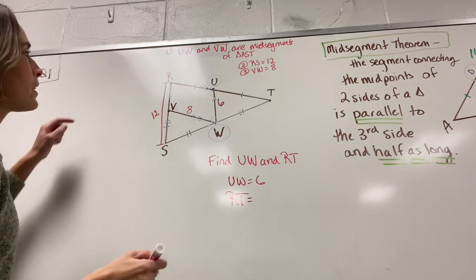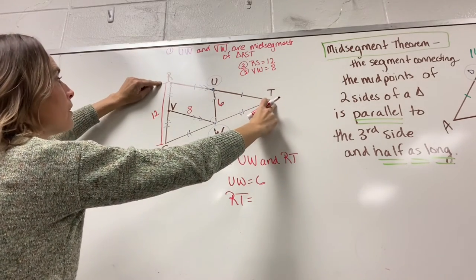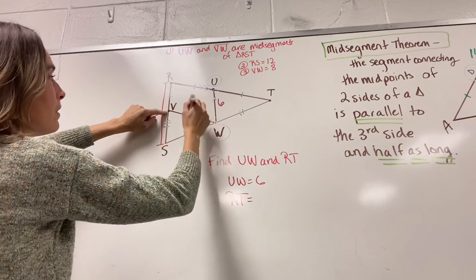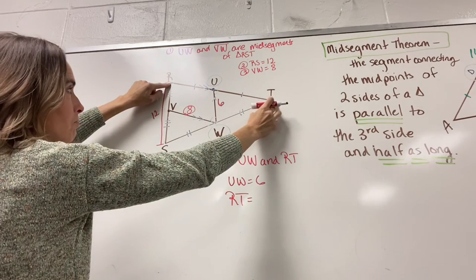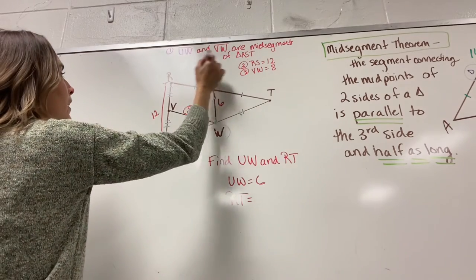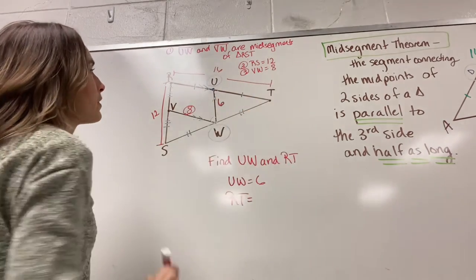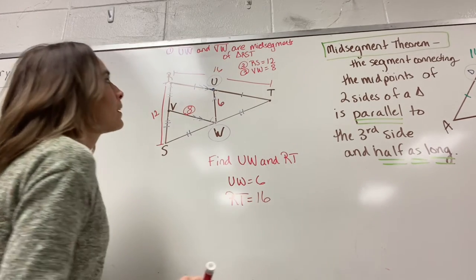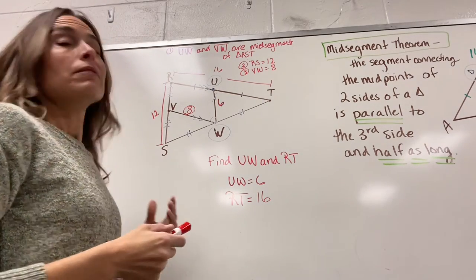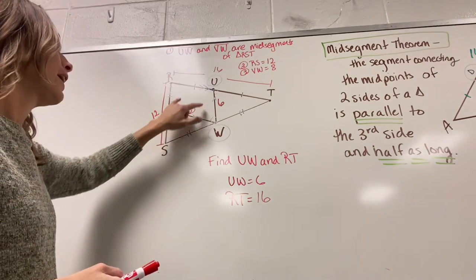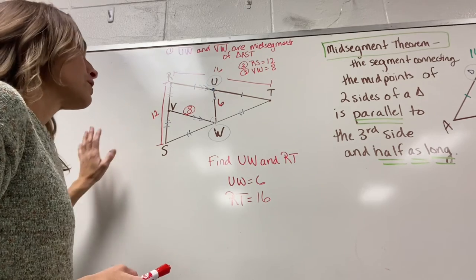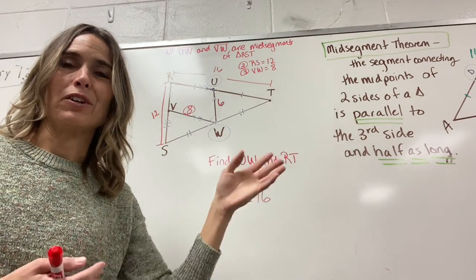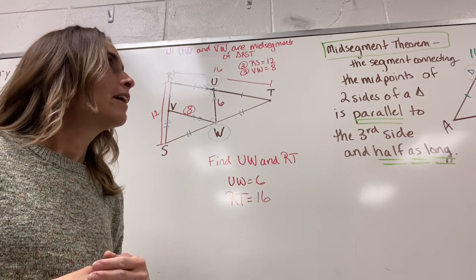Now let's find RT. VW is the mid-segment parallel to RT, and VW equals 8, so RT must be 16 — because the mid-segment is always half the length of the third side. So RT is 16. That was using our mid-segment theorem. We could also look at angles using parallel lines — alternate interior, alternate exterior angles with transversals. Keep those things in mind because you might need them later. And that is the lesson for today.